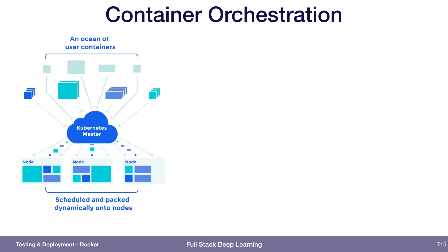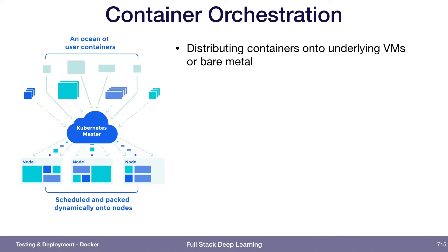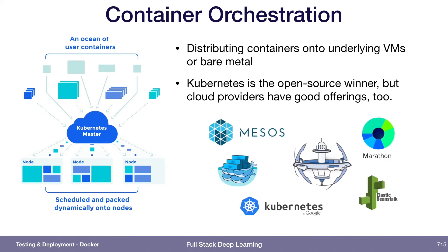Now that we've solved the problem of brittle dependency chains and heavyweight virtual machines by using lightweight containers, we have a new problem: how do we actually orchestrate all of these containers? The problem is distributing containers onto the actual machines that will execute them. Solutions that came out over the last few years are manifold — someone mentioned Mesos, there's Kubernetes, there's the AWS-specific one called Fargate, among others.